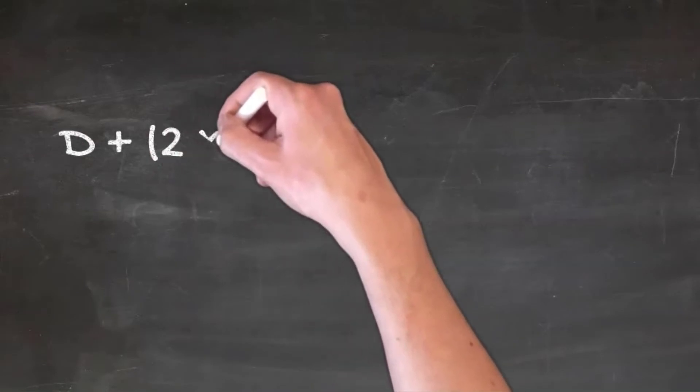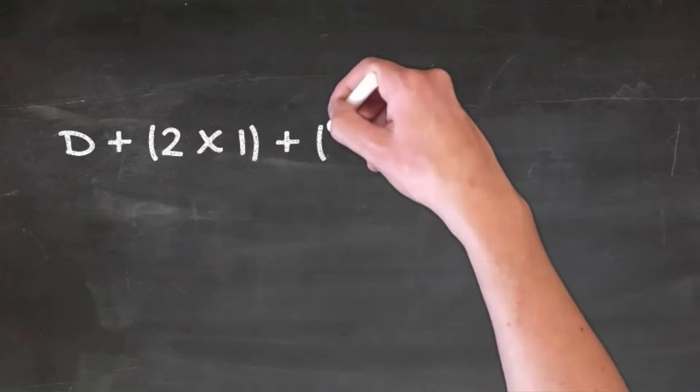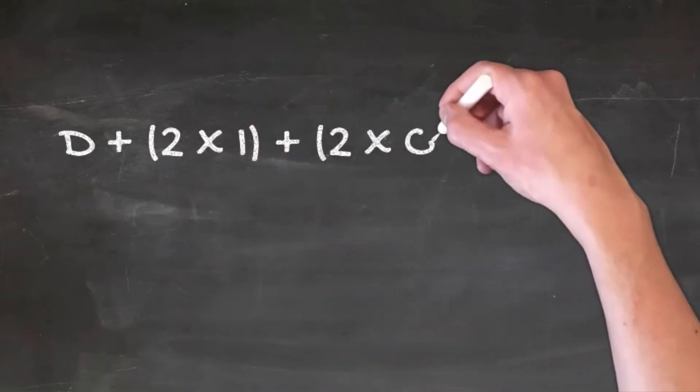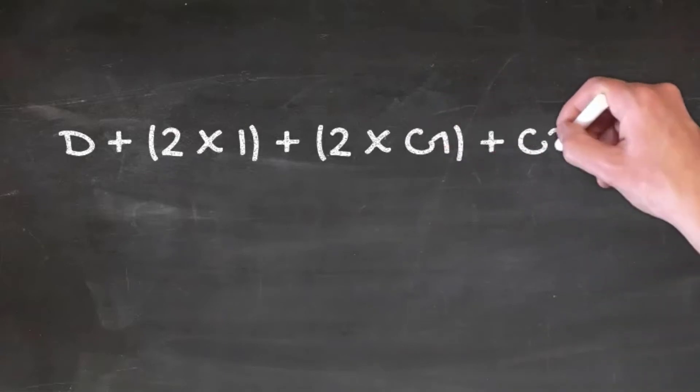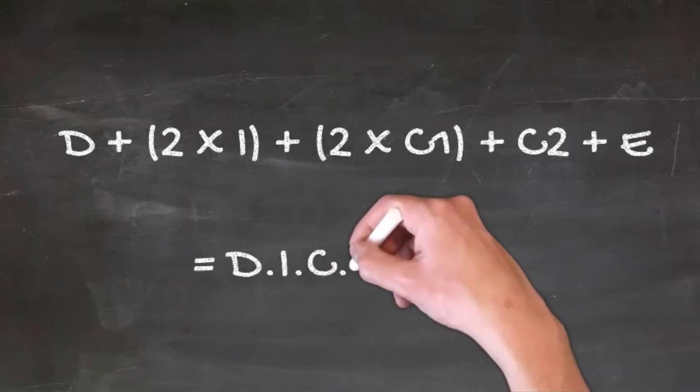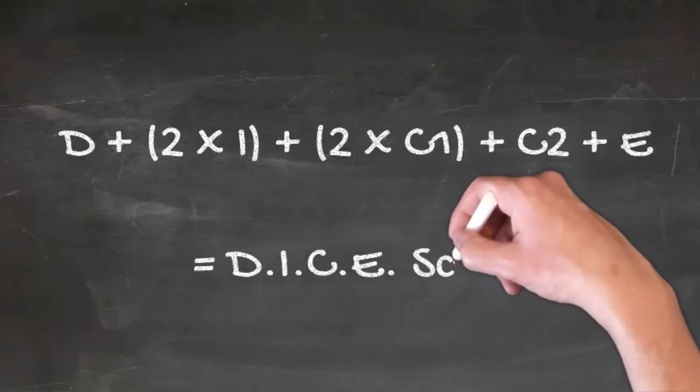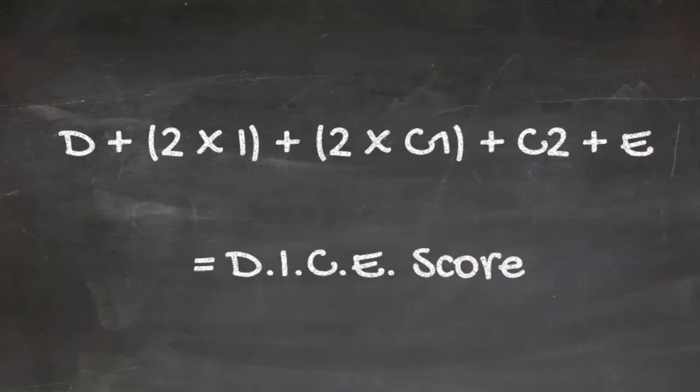Each factor is given a number based on its criteria. The numbers are used in this equation, yielding a score. So, how do you attribute a number to each of the factors? We'll dive into each factor to understand how the number is evaluated.